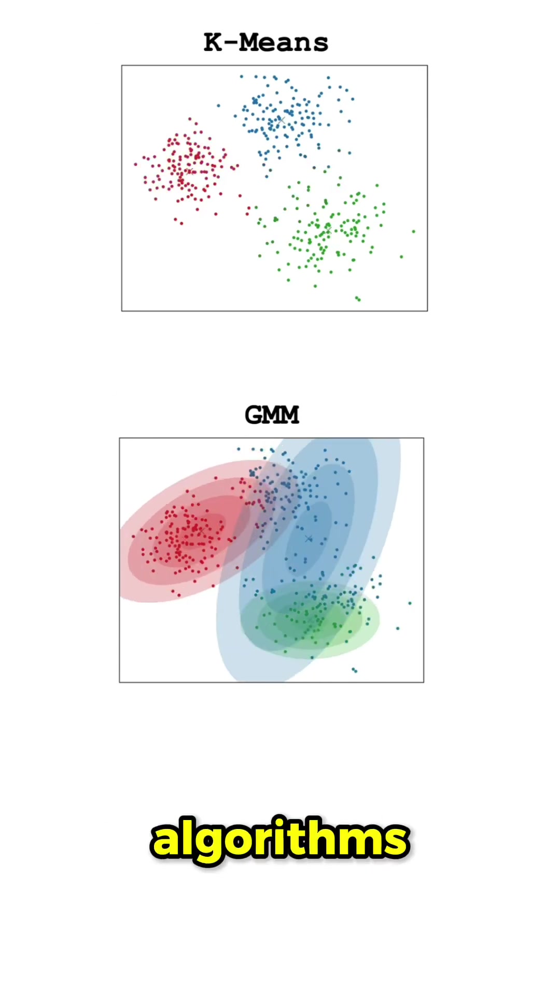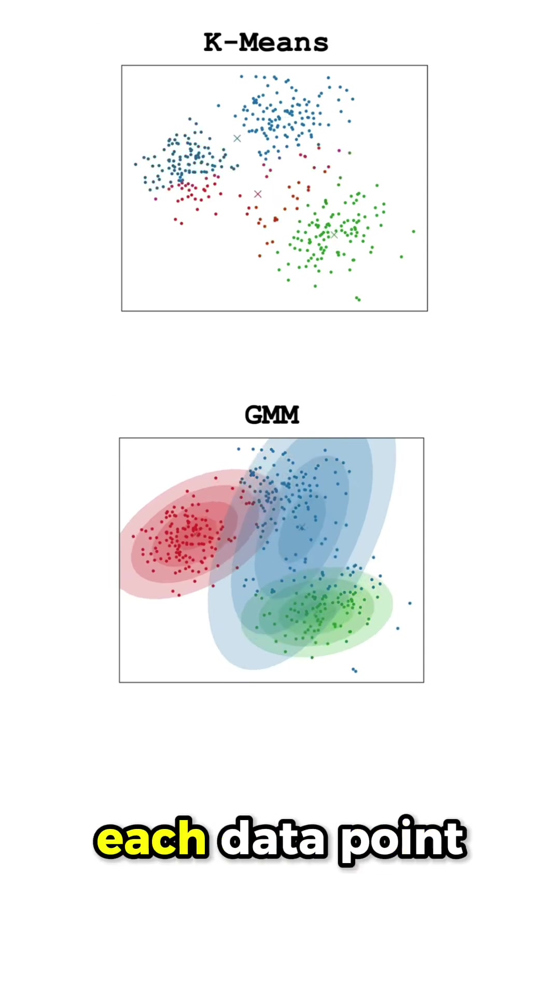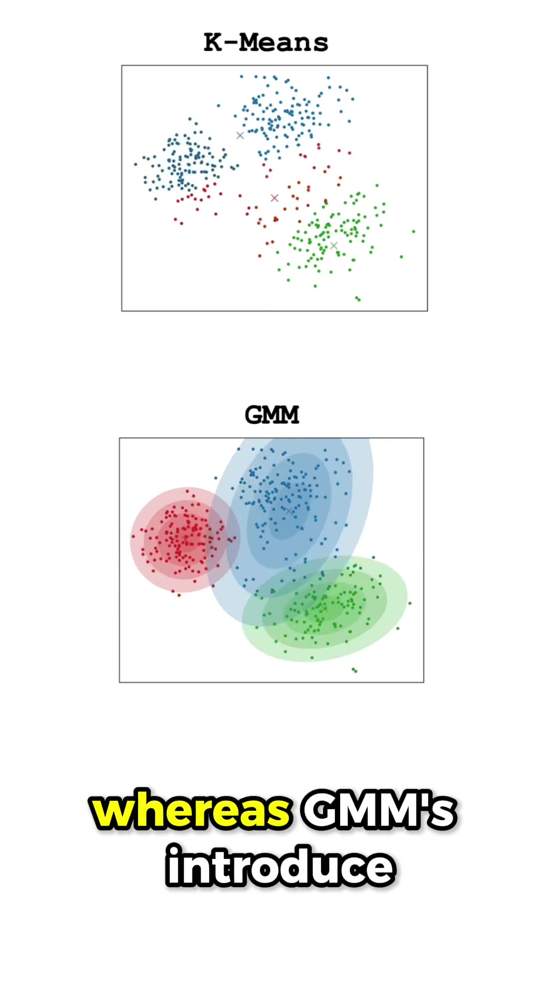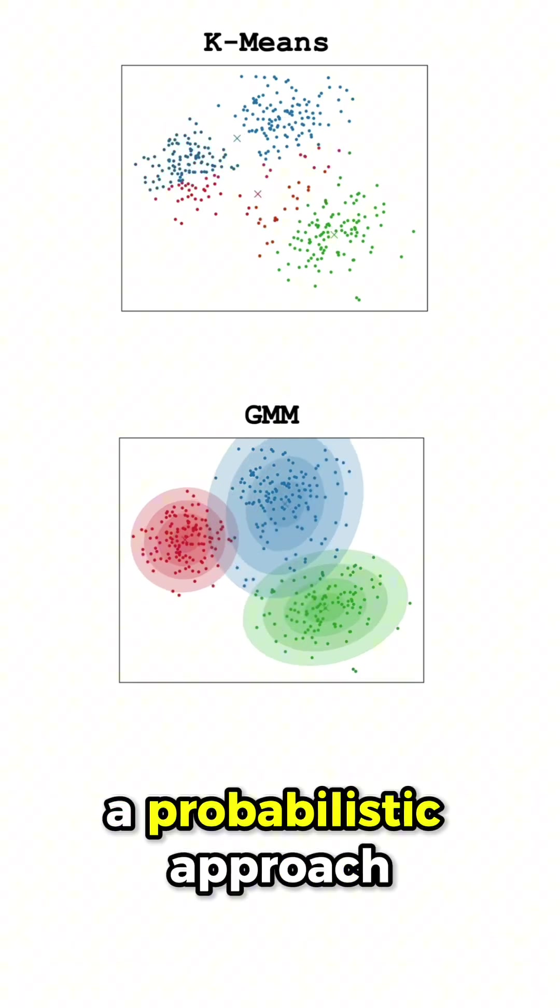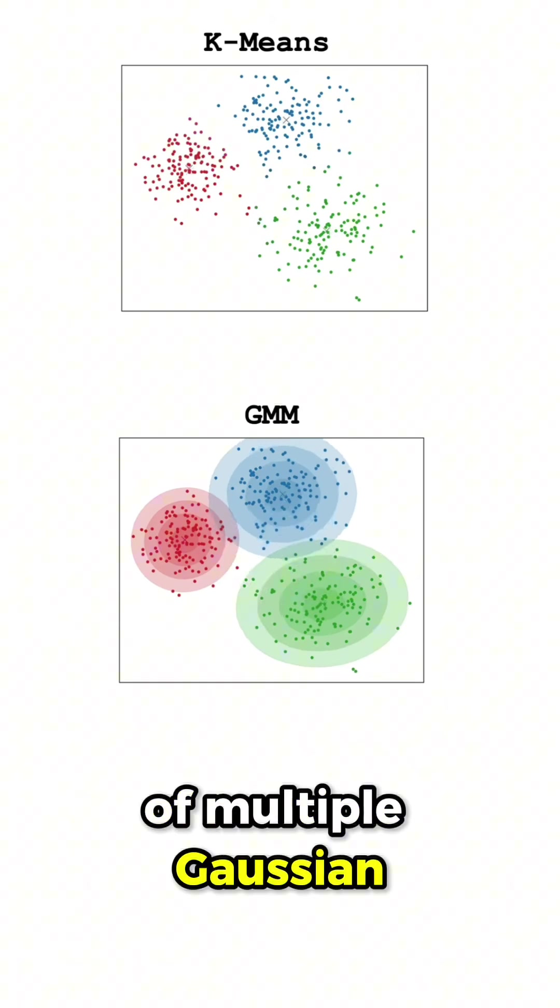Both are clustering algorithms, but one important distinction is that K-means assigns each data point to the cluster of its nearest neighbors, whereas GMMs introduce a probabilistic approach by modeling data points as a mixture of multiple Gaussian distributions.